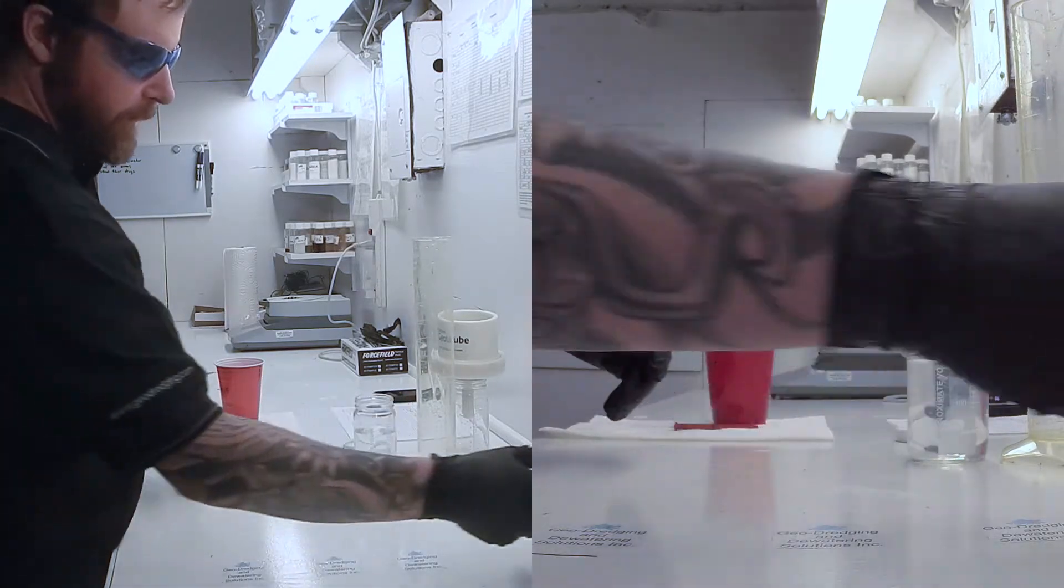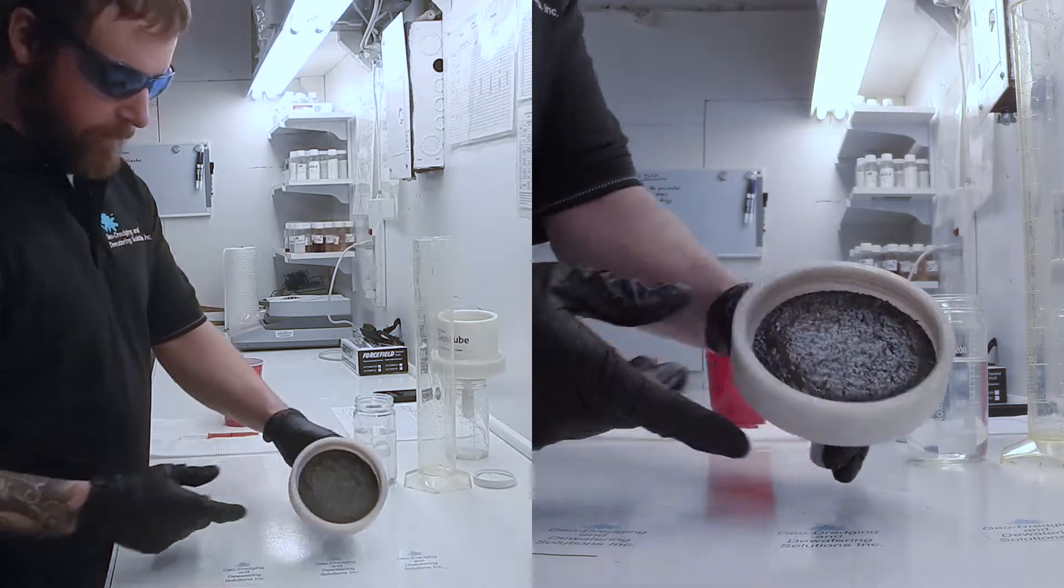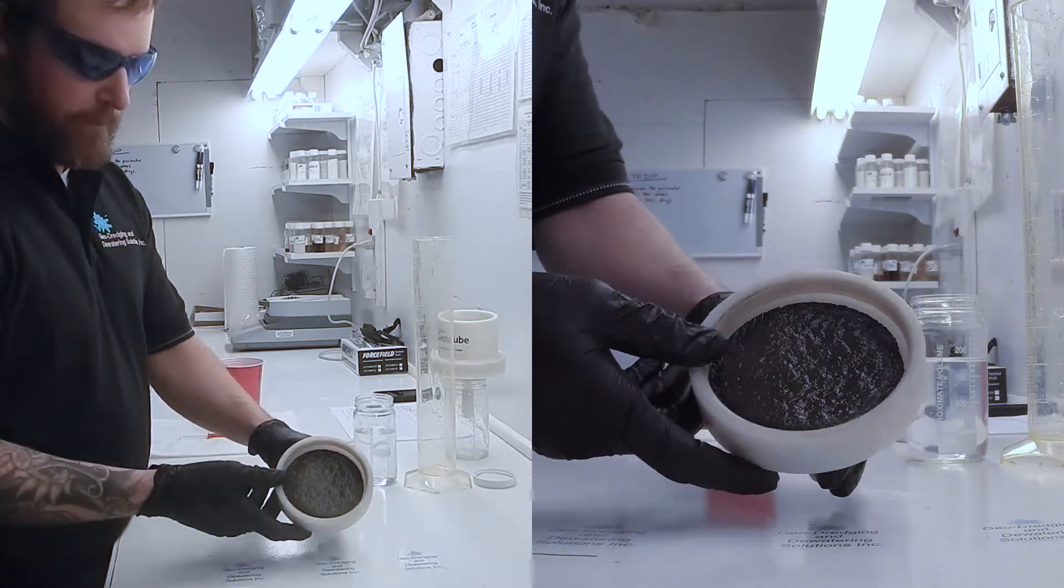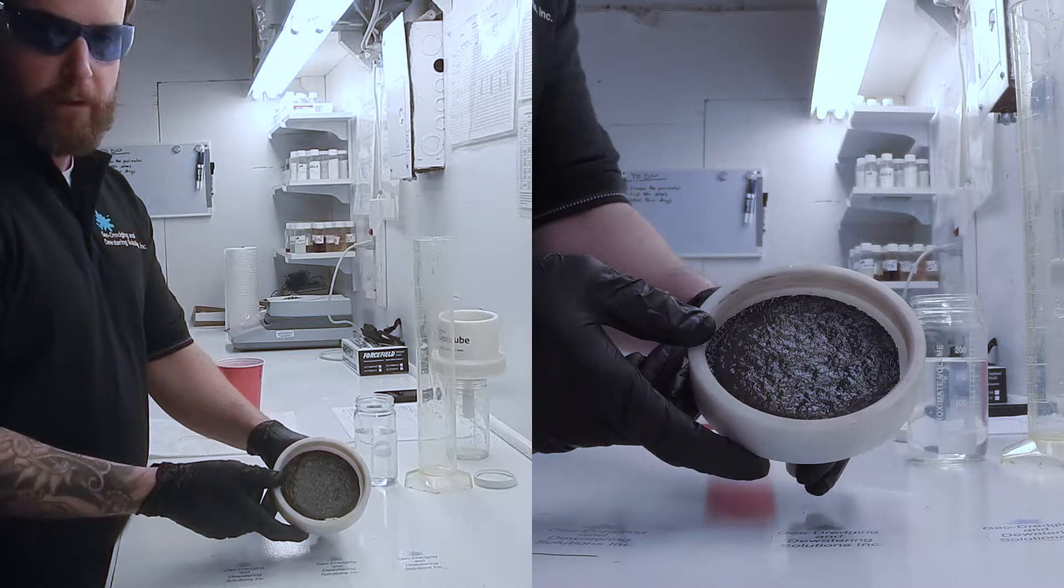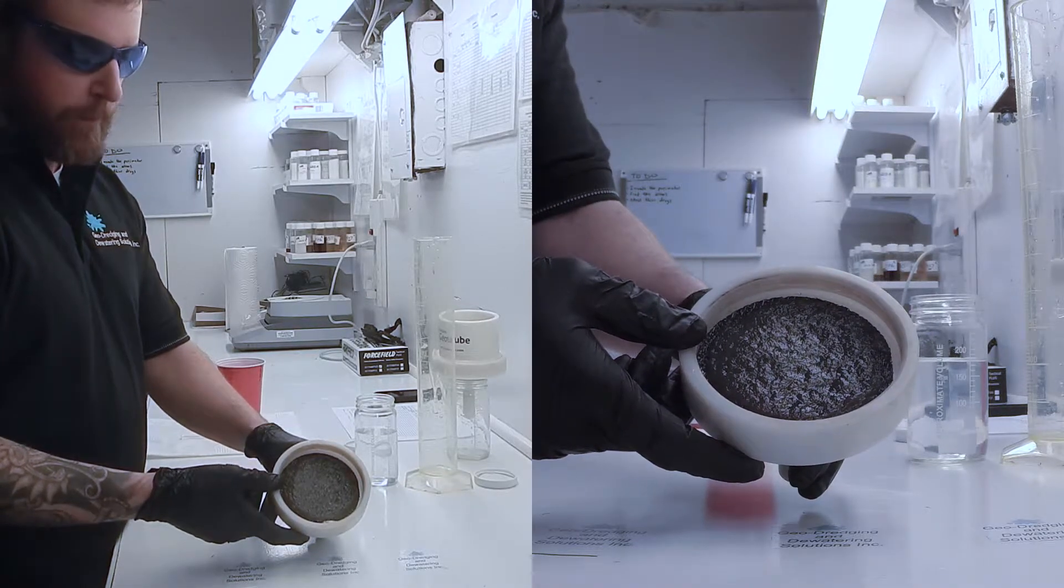What we're also left with in our RDT is a cake. It gives us a good idea of what the material will look like once it's dewatered. We can then also measure the moisture content of our dewatered material.